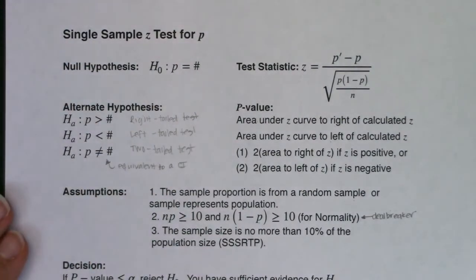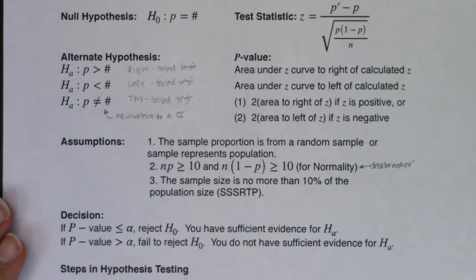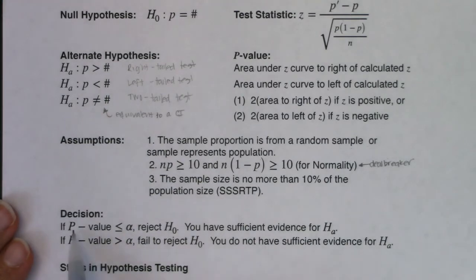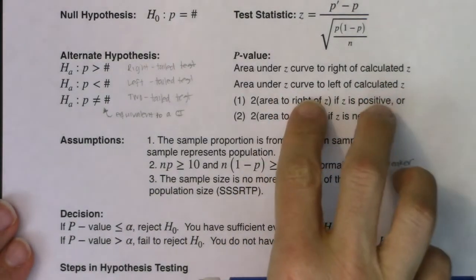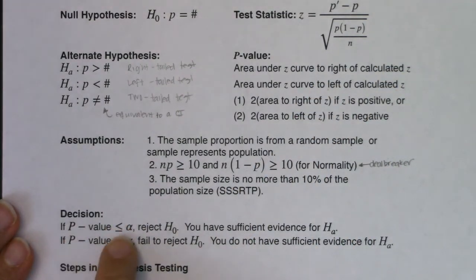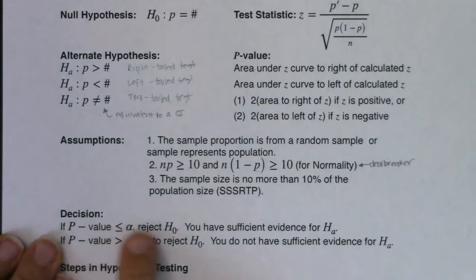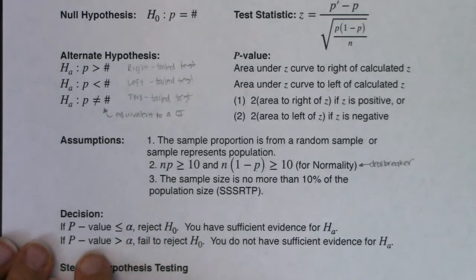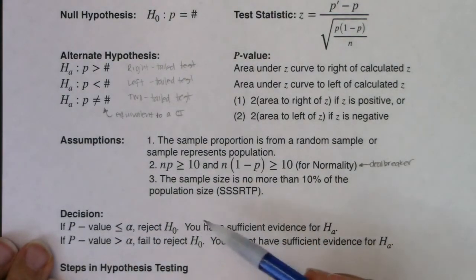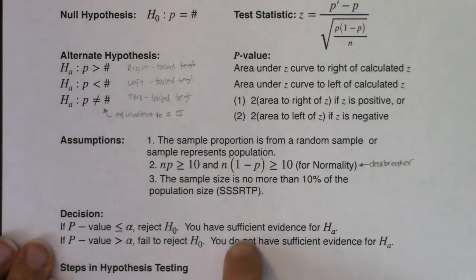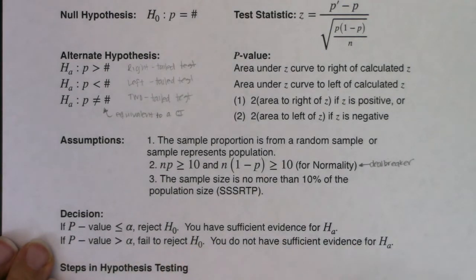Once you get a p-value, you have to make a decision: do you reject the null or fail to reject the null? If your p-value is less than or equal to your alpha — which defaults to 5% — you officially reject the null. If the p-value is greater than alpha, you fail to reject the null. If you reject the null, you say you have sufficient evidence for Ha. If you fail to reject, you say you do not have sufficient evidence for the alternate.